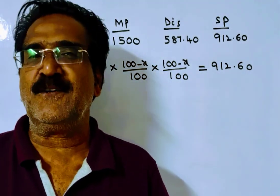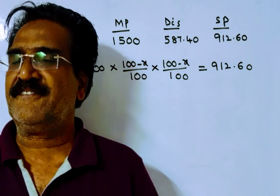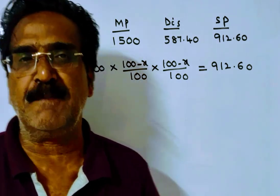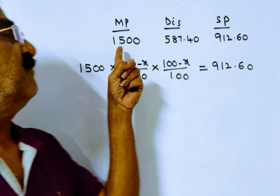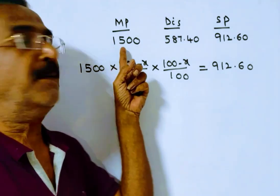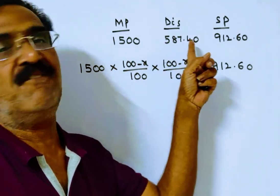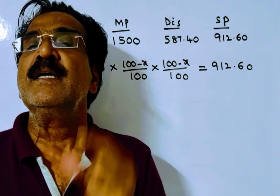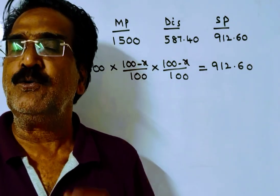Hi friends, good morning. Please look at the next problem in the discount chapter. The problem is given in the description box. This 1500 is the market price, this 587.40 is the discount which is equivalent to two successive discounts of x percent each.